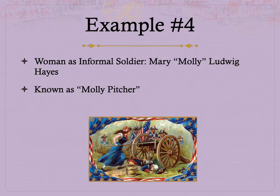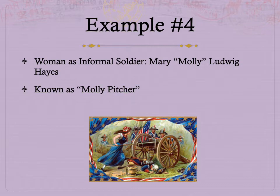Example four is the woman who went off to war and acted as an informal soldier — not enlisted in the regular army, no uniform, but nonetheless fighting alongside the men. Lots of army companies had women in them, and the most famous one is a woman known as Molly Pitcher. Her name was Mary Ludwig Hayes — Molly being the nickname for Mary — known as Molly Pitcher. In this picture she's depicted surrounded by red, white, and blue imagery, shown engaged in the activity that made her famous.